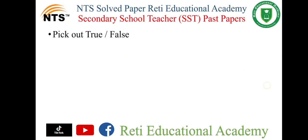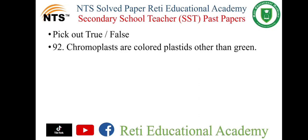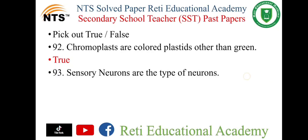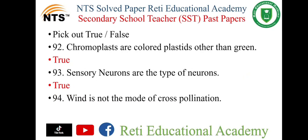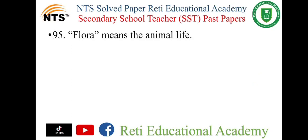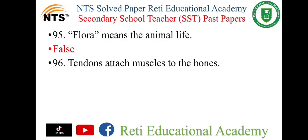Now comes true and false. Question number 92: Chromoplasts are colored plastids other than green. Question number 93: Sensory neurons are the type of neurons. Question number 94: Wind is not the mode of cross-pollination. Question number 95: Flora means the animal life. Question number 96: Tendons attach muscles to the bones.